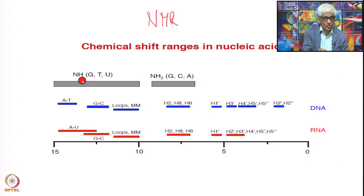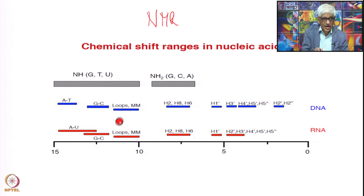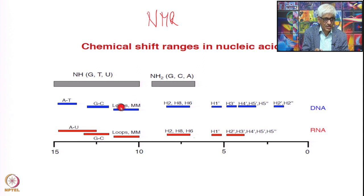From 10 to 15 ppm you have the imino protons of G, T, and U. These imino protons appear in this area and are the ones present in the loops — they are not hydrogen bonded. Because these imino protons are not hydrogen bonded, these are mismatches, also called loops.